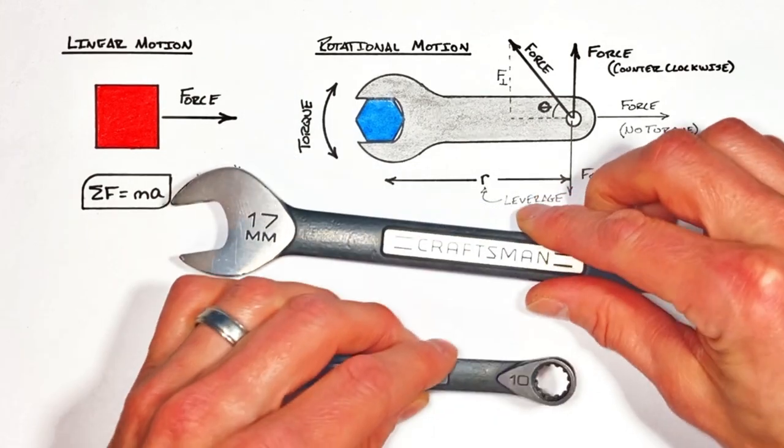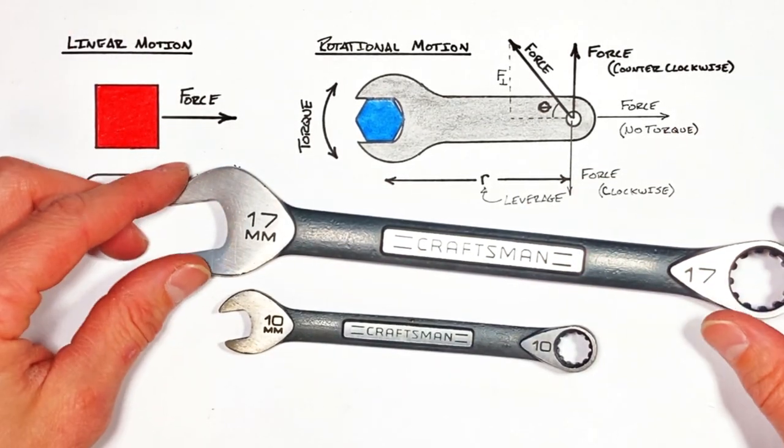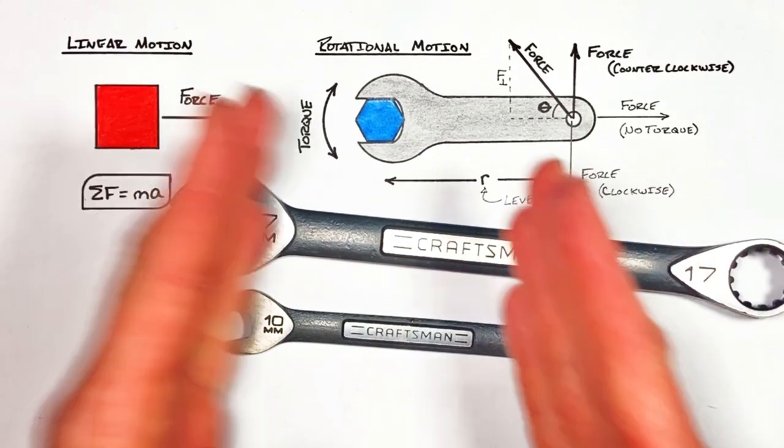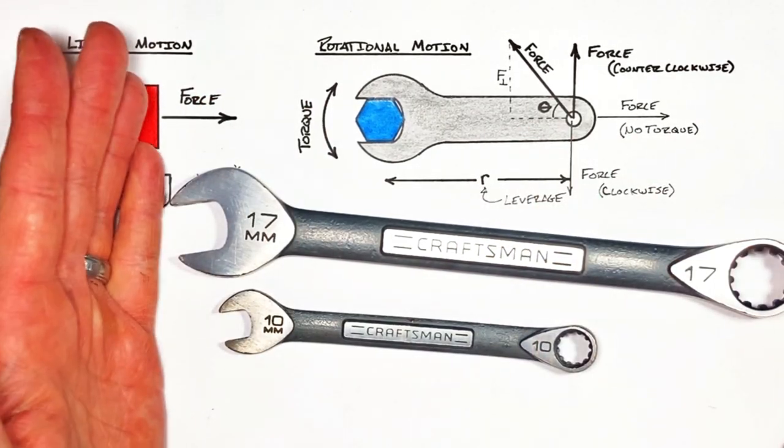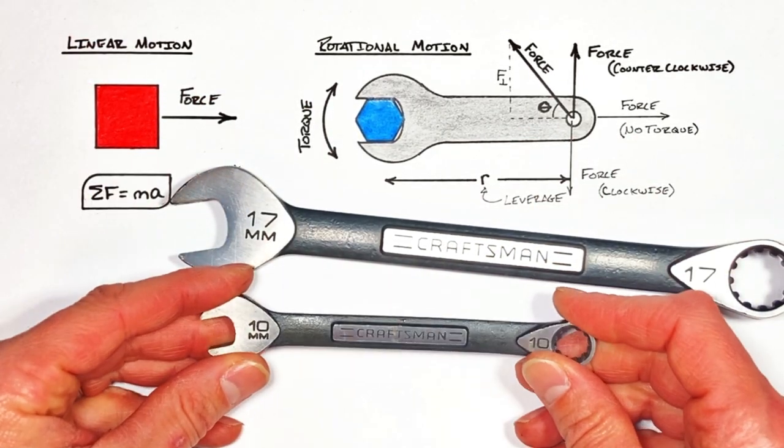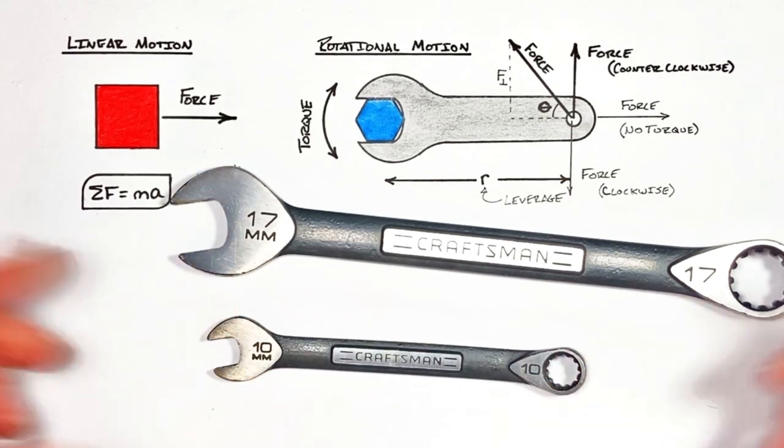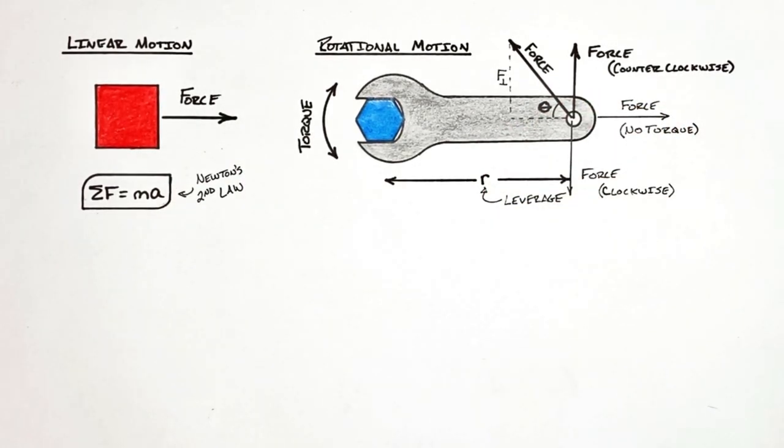And that's why wrenches aren't all the same size. I mean if you have a big bolt and you need to produce a lot of torque, you want a long wrench, because it has lots of leverage. A small wrench is only going to produce a little bit of torque. And the reality is, when it comes to torque, I don't care what anybody else told you, size matters.